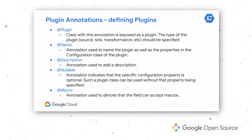Macro is a very useful plugin annotation. If you have properties whose values cannot be provided at configure time and need to be provided at runtime, you annotate those fields with macro and they get evaluated when the pipelines are actually running. For example, a password — you don't want to define a clear-text password at design time, but instead anytime a pipeline runs you can be prompted to enter a password.